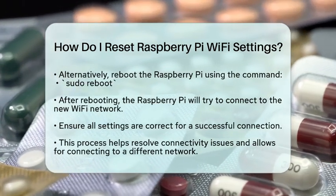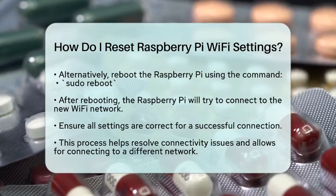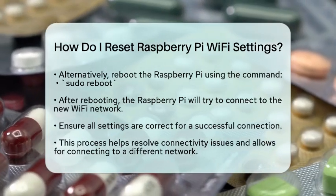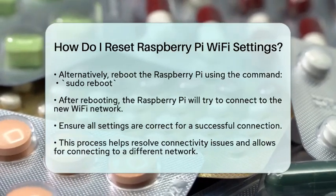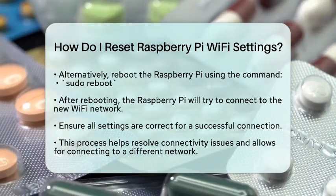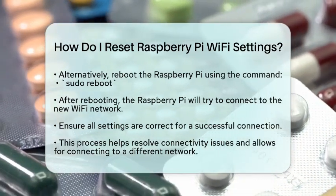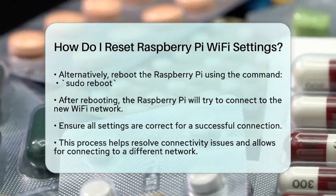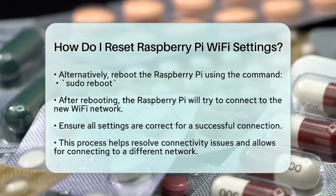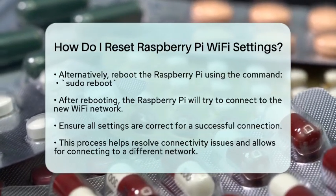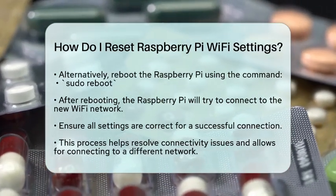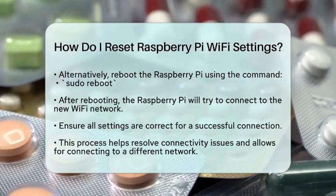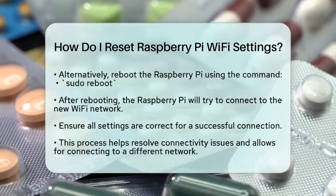After the reboot, your Raspberry Pi should attempt to connect to the new Wi-Fi network using the settings you just configured. If everything is set up correctly, you should have a successful connection. In conclusion, resetting the Wi-Fi settings on your Raspberry Pi involves removing the old configuration file, creating a new one with your current network details, and restarting the networking service. This process can help resolve connectivity issues and allow you to connect to a different network if needed.